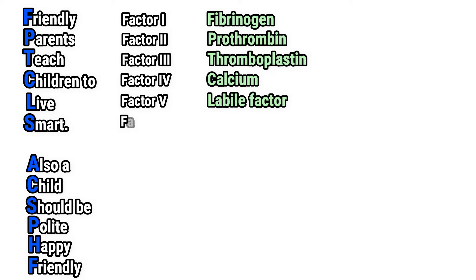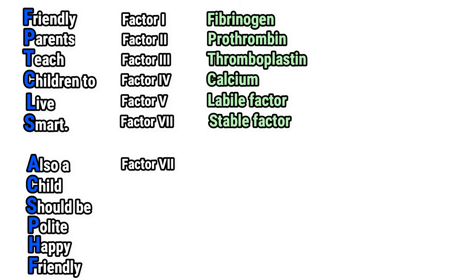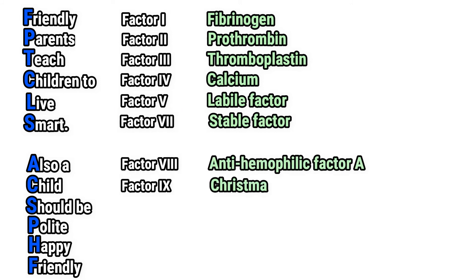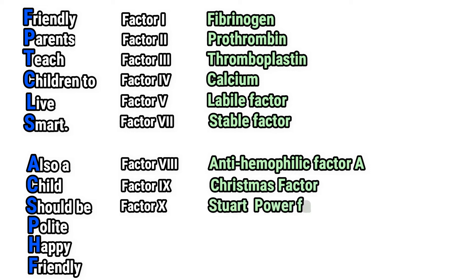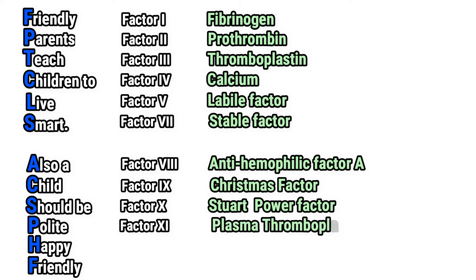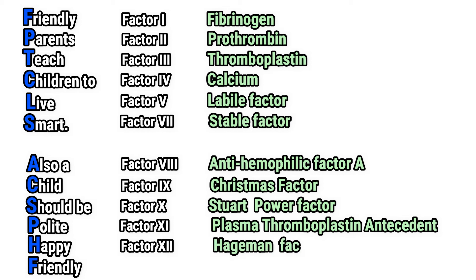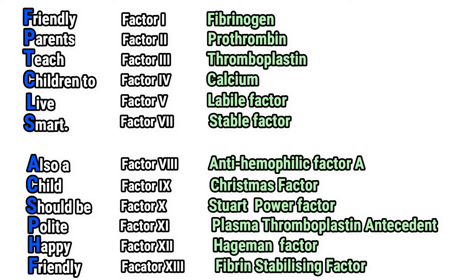S for Factor 7 — Stable Factor. A for Factor 8 — Anti-Hemophilic Factor A. C for Factor 9 — Christmas Factor, also known as Anti-Hemophilic Factor B. S for Factor 10 — Stuart Power Factor. P for Factor 11 — Plasma Thromboplastin Antecedent. H for Factor 12 — Hageman Factor. And lastly, F for Factor 13 — Fibrin Stabilizing Factor, also called Fibrinase.